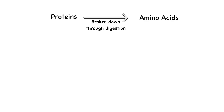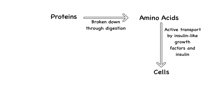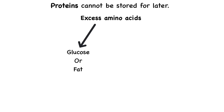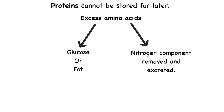Once amino acids are digested and brought into the body through the bloodstream, they are then transported into the cells of the body through active transport by insulin-like growth factors and insulin. Almost immediately, they are reassembled into proteins. Unlike carbohydrates and fats, proteins cannot be stored for later use. This means that any excess amino acids must either be converted into glucose or fat, or their nitrogen component must be removed and excreted. But before amino acids can be oxidized, they must be converted to molecules that can enter into the Krebs cycle. This brings us to the first major step in protein metabolism: deamination.